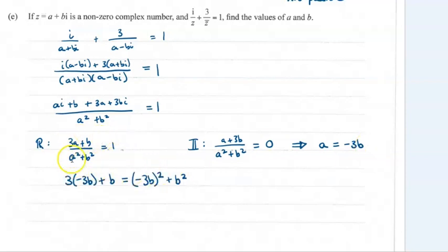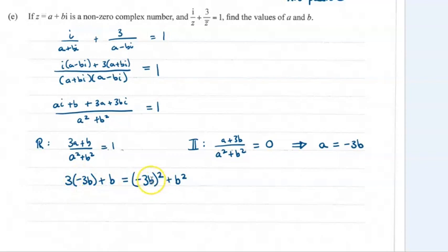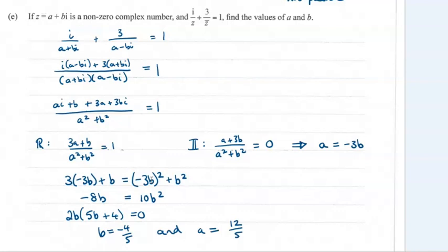The imaginary equation is most straightforward — bringing the denominator over gives a plus 3b equals 0, so a equals minus 3b. Substituting that into the real equation, doing a bit of simultaneous equations with a equal to minus 3b, carrying on working that through, we end up with b equals minus 4 fifths and a equals 12 over 5. If you wanted to check in the exam and you've got time, you could put that value of z — 12 over 5 minus 4 over 5i — into the equation and check it comes out to be 1.